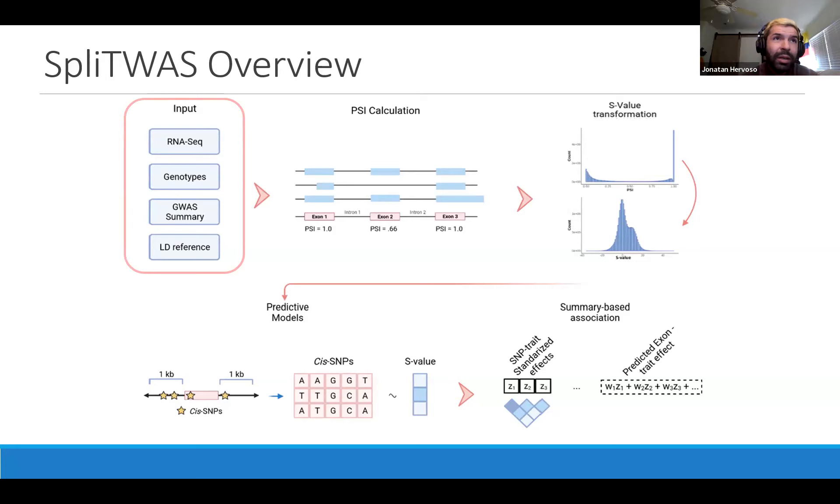First, to start with the framework, we need our inputs. SPLITWAS takes a relatively basic set of inputs. It relies on RNA-seq genotypes, GWAS summary statistics of the trait you're studying, and then an LD reference panel, which can be easily accessible through 1,000 Genomes.